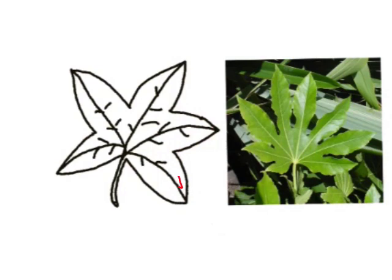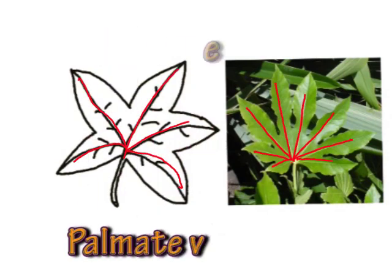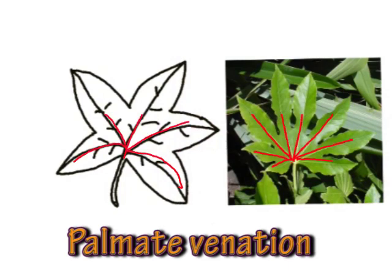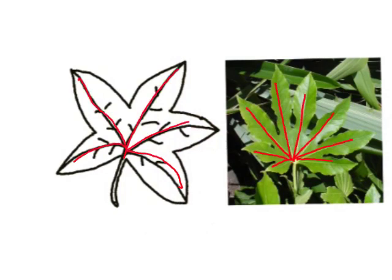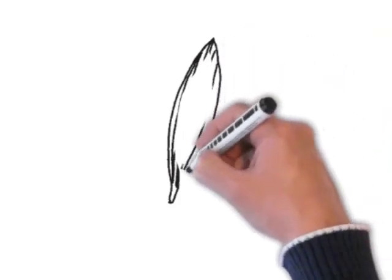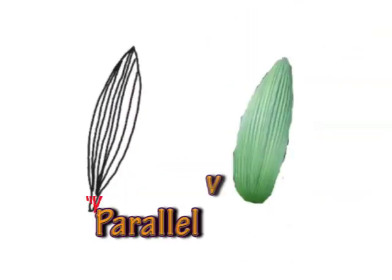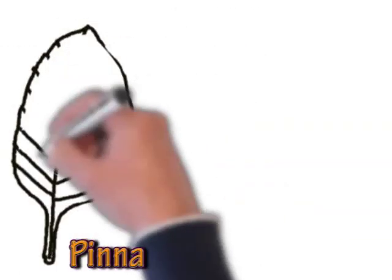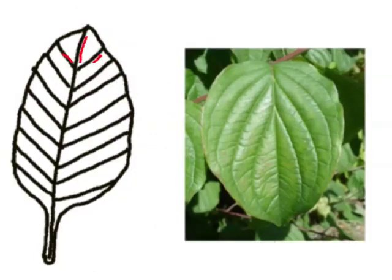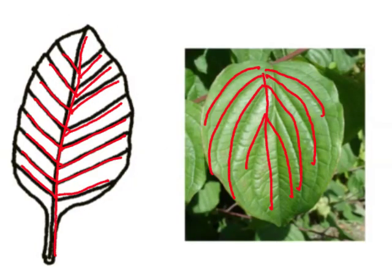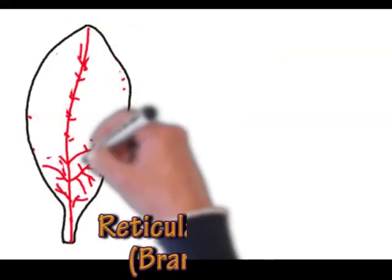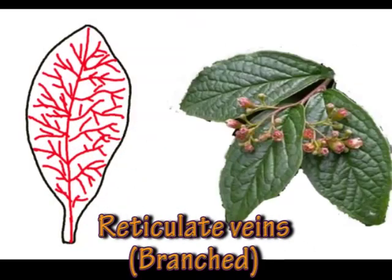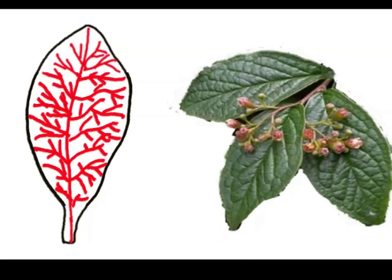Now looking at the arrangement of venation — you can see this one has palmate venation, with veins that radiate out in a palm shape. On the next one the leaves have parallel veins, so it's parallel venation. There are a lot of plants like grasses, hostas, and bamboos which have parallel venation. The next one has pinnate venation — opposite veins — and you can see on the Cornus on the right it has opposite veins. Then there are reticulate or branched veins, like the Cotoneaster on the right — they just branch out.